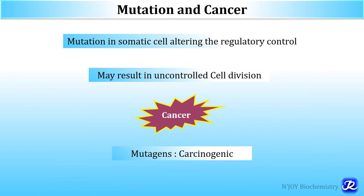Mutations may be non-lethal but can alter regulatory control. Such mutations in somatic cells altering regulatory control may result in uncontrolled cell division leading to cancer. As some mutations may lead to cancer, any substance causing increased mutation can also increase the possibility of cancer, and that is why all mutagens may be considered as carcinogenic.